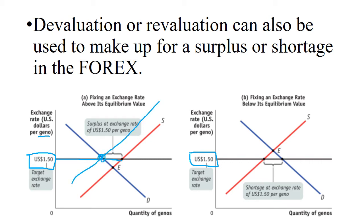To decrease supply, the government buys up its own currency in the foreign exchange market. If they hold it, it's no longer circulating. However, they have to pay for it with a third currency — they can't use their own Gino (that would be self-defeating) and can't use the US dollar (that would affect the dollar's exchange rate). So they need stockpiles of a third currency to accomplish this.